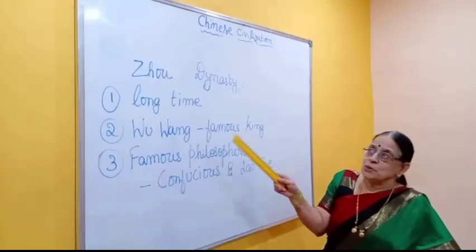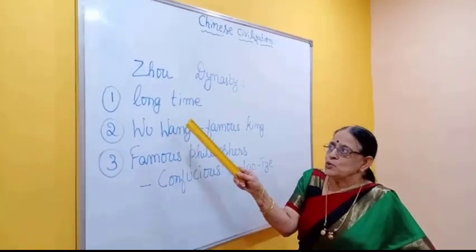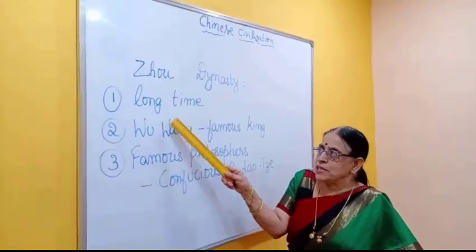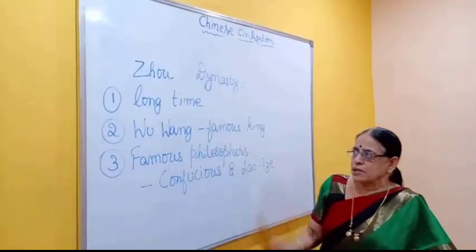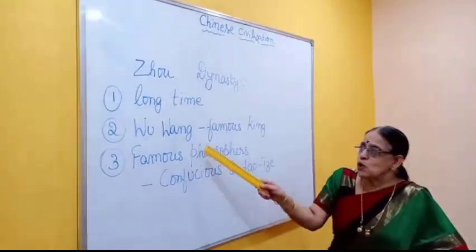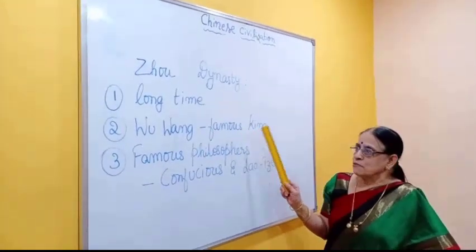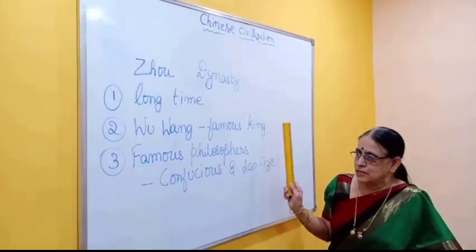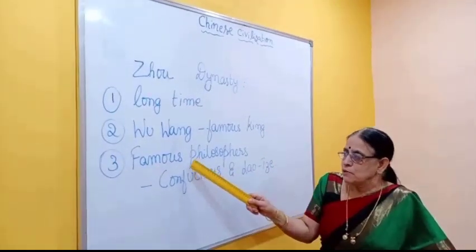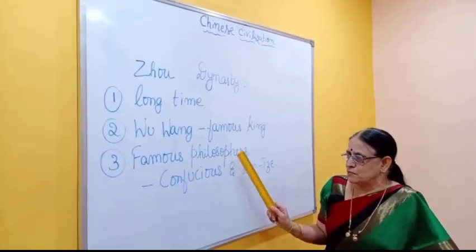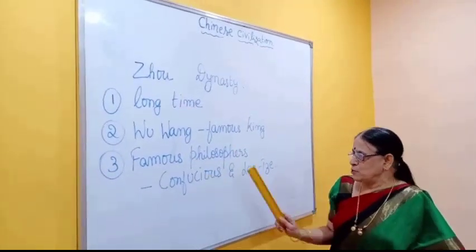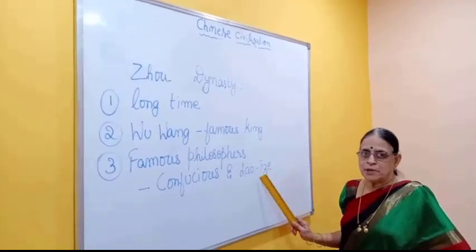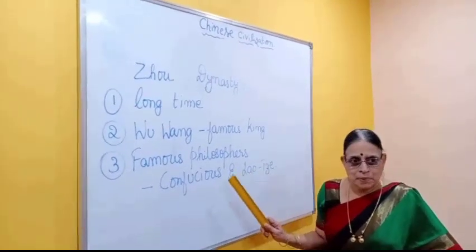Let us go to Zhou dynasty. Zhou dynasty ruled ancient China for a long time. Wu Han was the famous ruler of this dynasty. Famous philosophers Confucius and Lao Tse lived during this period.